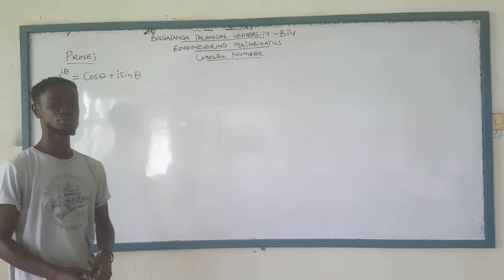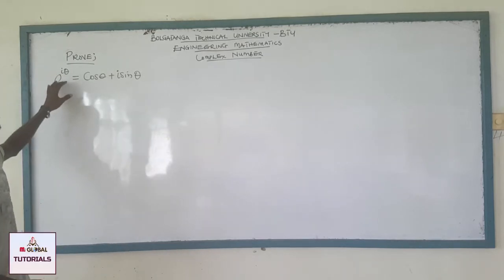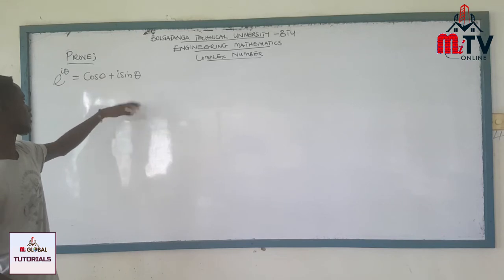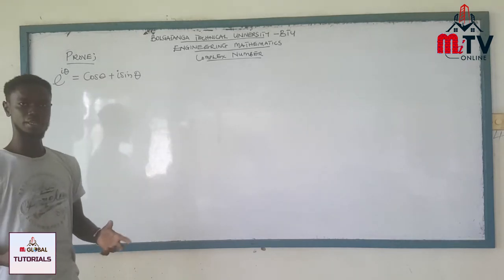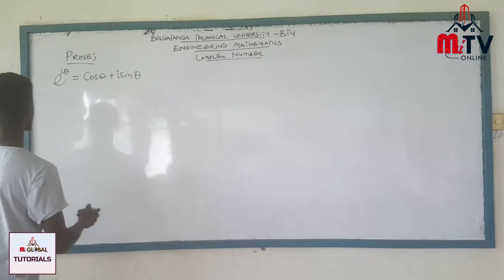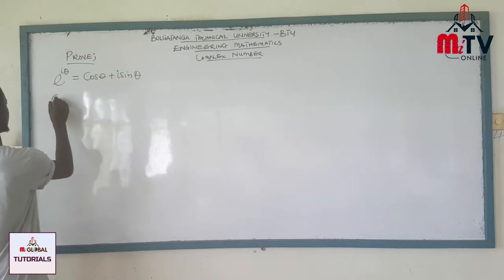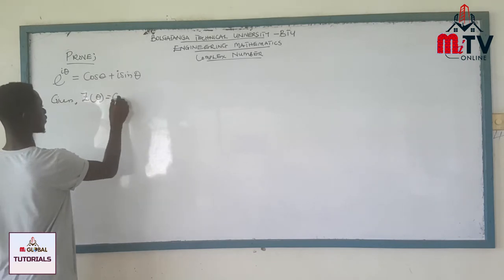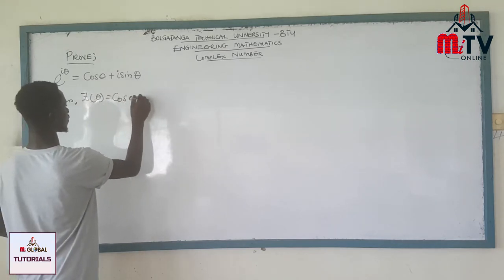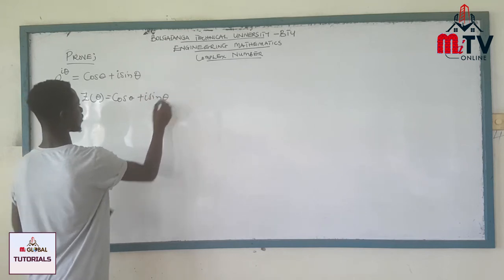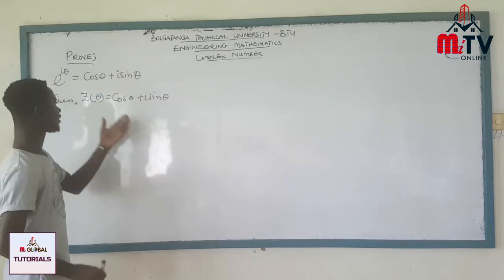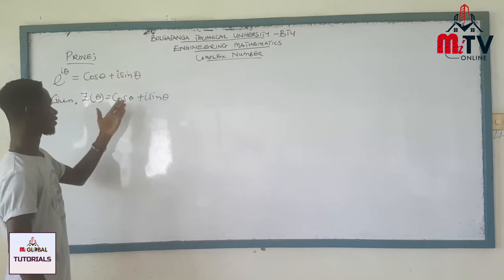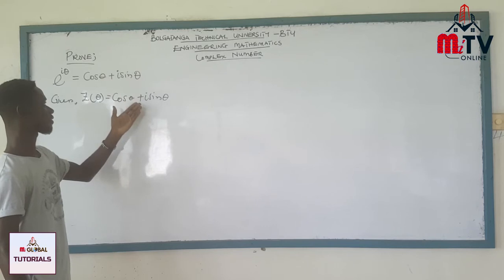Today, in today's tutorial, I'm going to show you why e^(iθ) is equal to cosine θ plus i sine θ. For a given complex number in polar form, z with respect to θ is equal to cos θ plus i sine θ. This is a general form of a complex number.